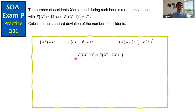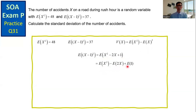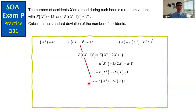Start with the expected value of the square of X minus 1. Expand the square terms: we get the expected value of X squared minus 2X plus 1. By the properties of the expected value of polynomials, we get the expected value of X squared minus the expected value of 2X plus the expected value of 1. The expected value of 2X is 2 times E[X], and the expected value of the constant 1 is simply 1. The expected value of this square term is 37, and the expected value of X squared is 48.